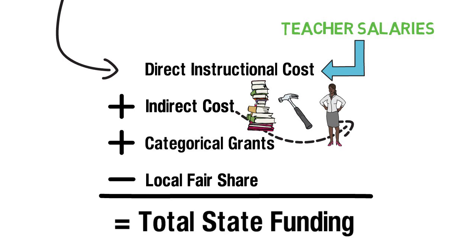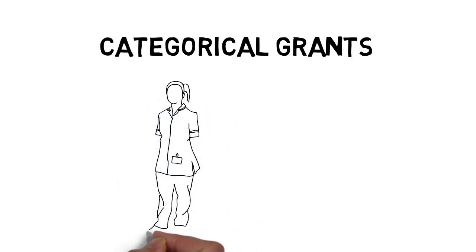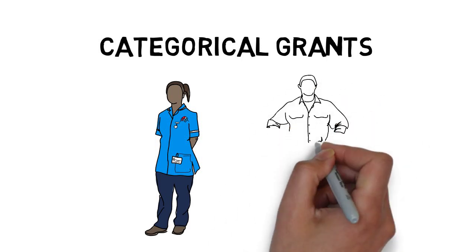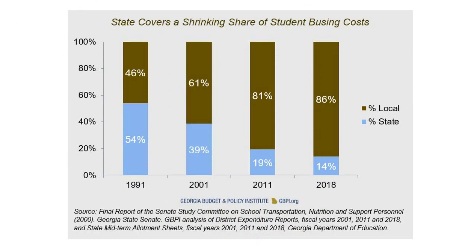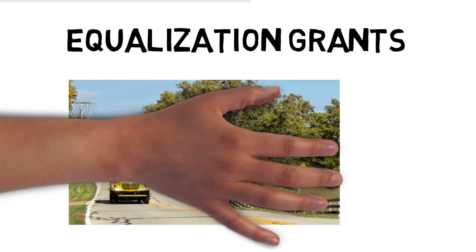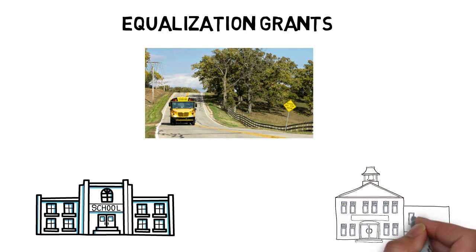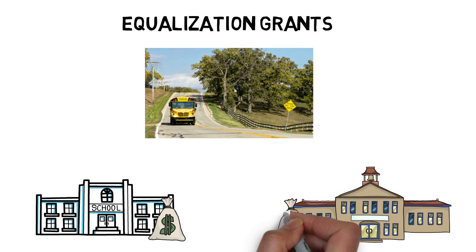After the calculation of direct and indirect educational cost and the subtraction of the local fair share, the state provides the fourth bucket: categorical grants. These grants are for services such as paying school nurses, or sparsity, which helps smaller districts pay for overhead fixed costs like air conditioning. School bus transportation is also funded through categorical grants, although the state has paid a significantly lower percentage of the cost since 1991, when it paid over half. Equalization grants are also in this bucket — the state provides this money to districts that have less ability to raise money through property taxes. Even though every district has to tax five mils for education, there is nothing stopping them from taxing more. Equalization grants are given to districts with a lower tax base to ensure that all districts can provide a basic public education.